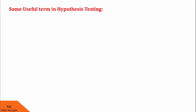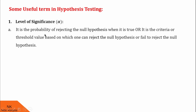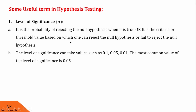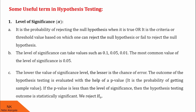Now let us see some useful terms in hypothesis testing. First in the list is level of significance, which we usually denote with the letter alpha. It is the probability of rejecting the null hypothesis when it is true, or it is the criteria or threshold value based on which one can reject or fail to reject the null hypothesis. The level of significance can take values such as 0.1, 0.05, and 0.01 — basically 10%, 5%, and 1%. The most common value is 5%, that is 0.05. The lower the value of level of significance, the lesser is the chance of error.